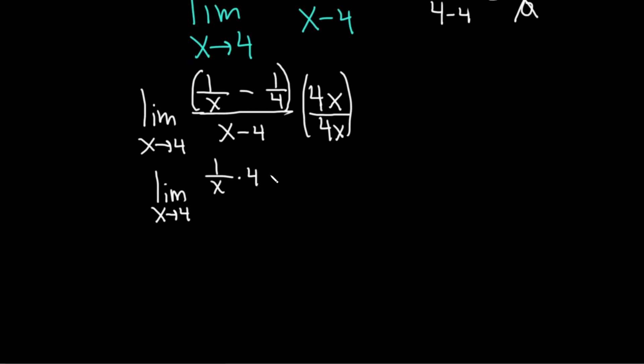times 4x minus and then it's 1 over 4 times 4x. We're basically just taking this 4x and multiplying it by each of these terms. It's called distributing. Divided by, and then here we have x minus 4 times, and then we still have the 4x here.